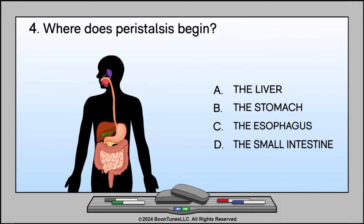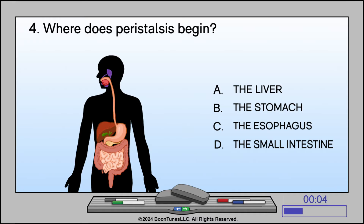Where does peristalsis begin? A. The liver. B. The stomach. C. The esophagus. D. The small intestine. The answer is C: The esophagus.